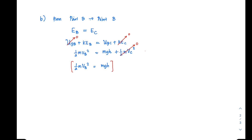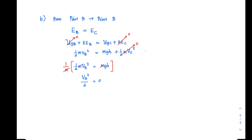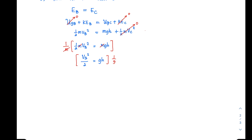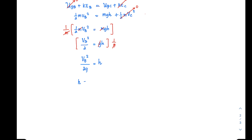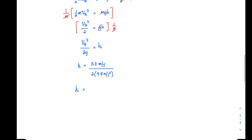Solving for H: divide both sides by g, giving H equals v_B squared divided by 2g. Substituting v_B equals 3.11 meters per second and g equals 9.8 meters per second squared, this gives H equal to 0.49 meters.